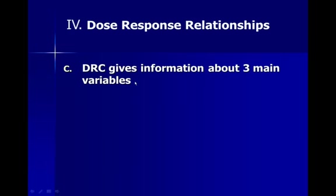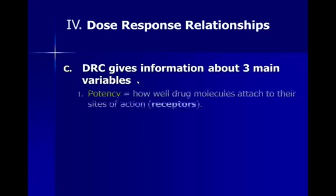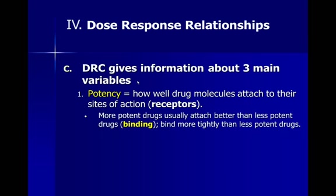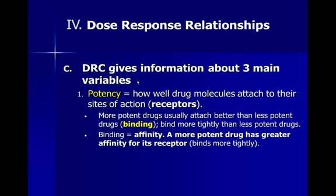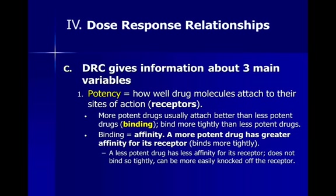The dose-response curve gives us information about three very important variables. The first is potency — how well the drug molecules attach to their sites of action. A very potent drug is going to bind very efficiently and have an effect. More potent drugs bind more tightly than less potent drugs — binding is the same thing as what we call affinity, so a more potent drug has a greater affinity for its receptor. You can think of it like two magnets: weak magnets bind loosely, but very strong magnets bind very tightly. A less potent drug has less affinity, doesn't bind so tightly, and can be more easily knocked off the receptor.